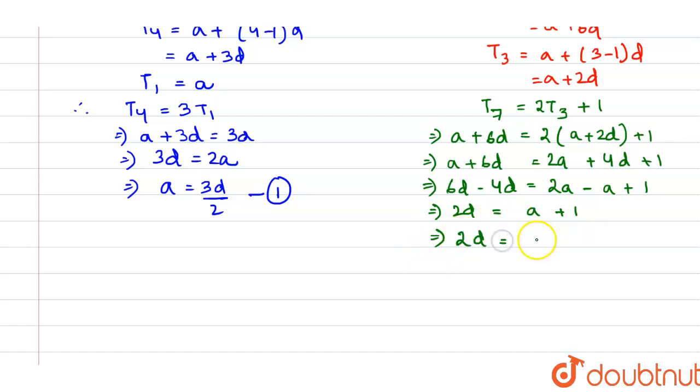we get 2d is equals to 3d by 2 plus 1 or 2d minus 3d by 2 is equals to 1 or taking an LCM 2, we have 4d minus 3d is equals to 1.